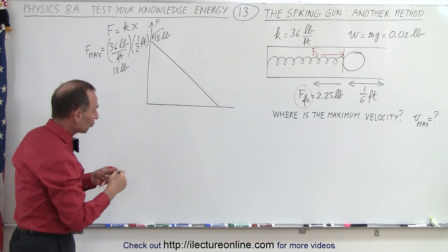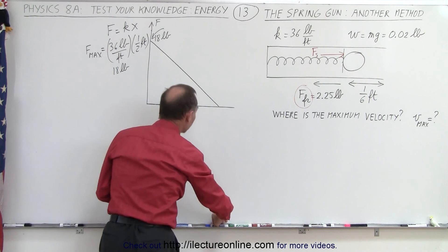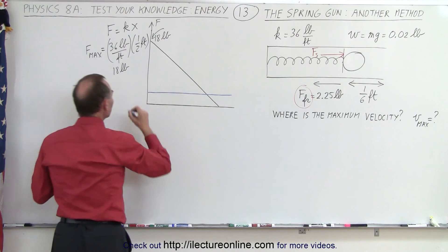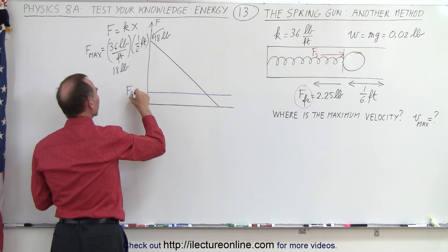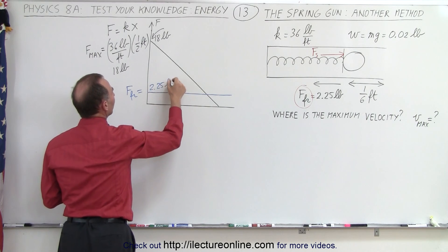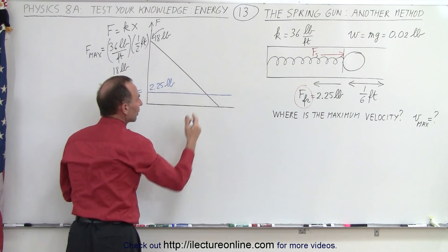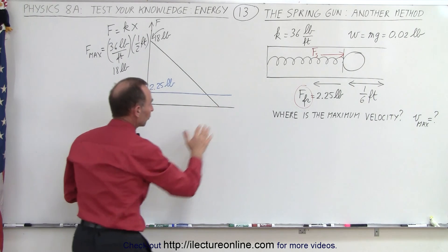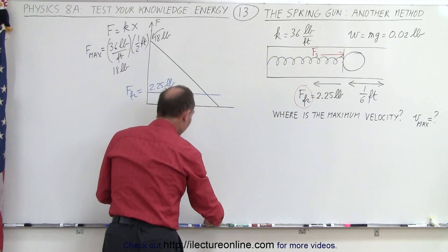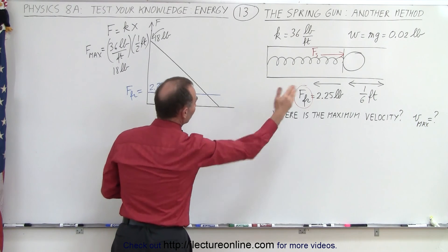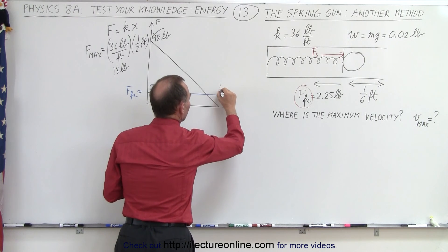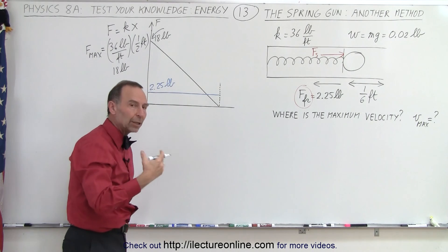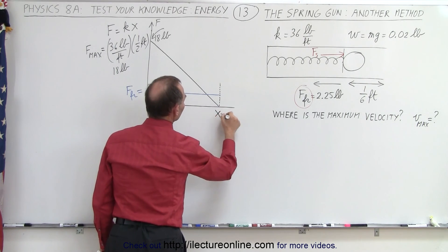We also have a force pushing back in the opposite direction — let's use a different color. The force due to friction is equal to 2.25 pounds. So you can see there's going to be some point where the friction force is greater than the spring force. By the time the spring force goes to zero, that's when the ball reaches the edge of the barrel — that's when the spring is fully elongated, and the ball is back at the equilibrium point of the spring, where x equals zero.